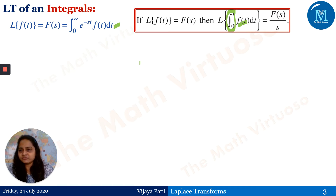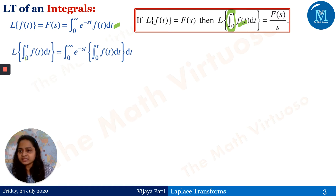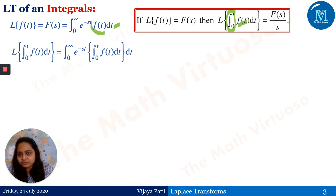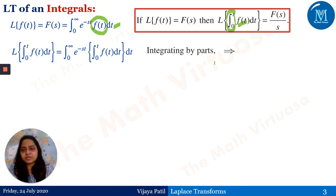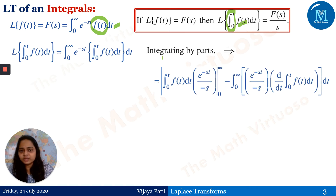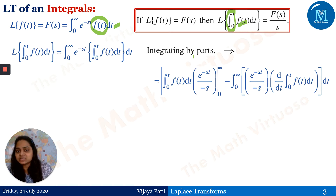By the definition of Laplace transform, we are applying this: the Laplace transform of the integral from 0 to t of f(t)dt equals the integral from 0 to infinity of e^(-st) times the integral from 0 to t of f(t)dt. That means this f(t) is being replaced with the integration from 0 to t of f(t)dt. Now we apply integration by parts, because we have got two functions here. We will integrate with respect to t, applying the u·v rule of integration.